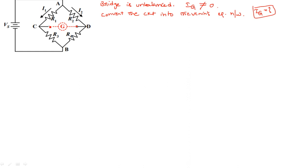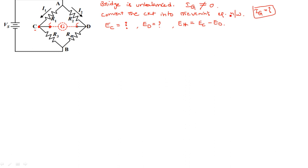Now calculate the voltage at node C and the voltage at node D, then take the difference between these two — that gives the Thevenin's equivalent voltage. Let us consider the node voltage at C as EC, and similarly we need to calculate ED. Therefore ETH is equal to EC minus ED.